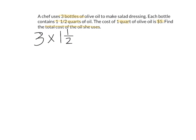We change one and a half into an improper fraction: 2 times 1 is 2, plus 1 is 3, so we have three halves. That gives us 3 over 1 times 3 halves. Multiplying across: 3 times 3 equals 9, and 1 times 2 equals 2. So the total amount of oil is nine halves quarts.